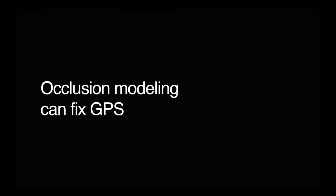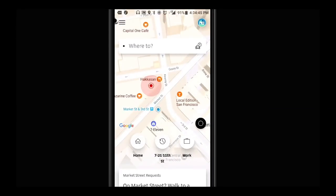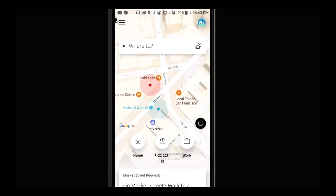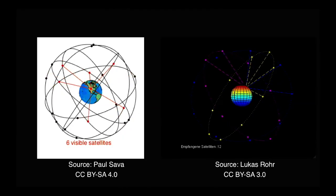And the solution that we've come up with is something called occlusion modeling. So in the spirit of the internet finished product first, the blue dot is our output, the red is the phone's built-in GPS, and our true location is pretty close to the 7-Eleven right there. So we're still not perfect, but we're getting you on the right side of the street, on the right sidewalk.